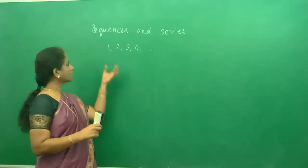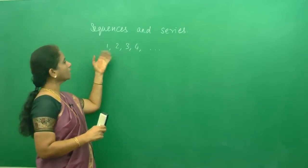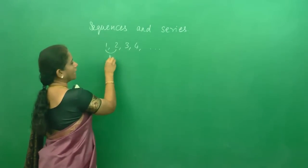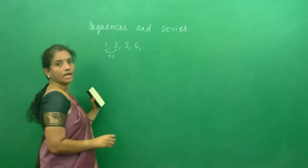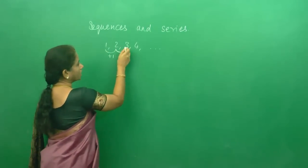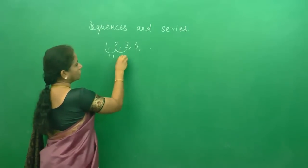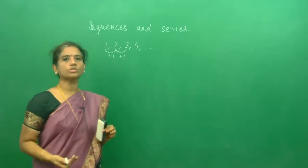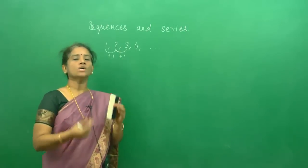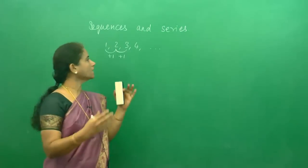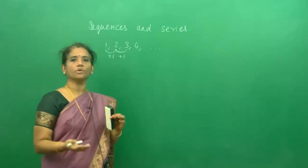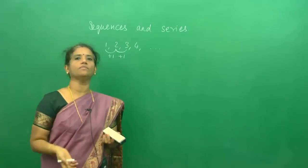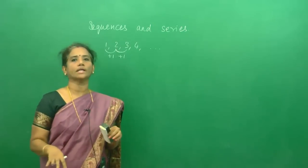Why is it called a sequence? From the second number to the first number we are adding 1, and to get the third number we should add 1 — like that it goes on and on. It follows a rule, so the numbers are arranged so that they follow some rule. It can be addition, subtraction, multiplication, division — any rule it can follow. It is a sequence.